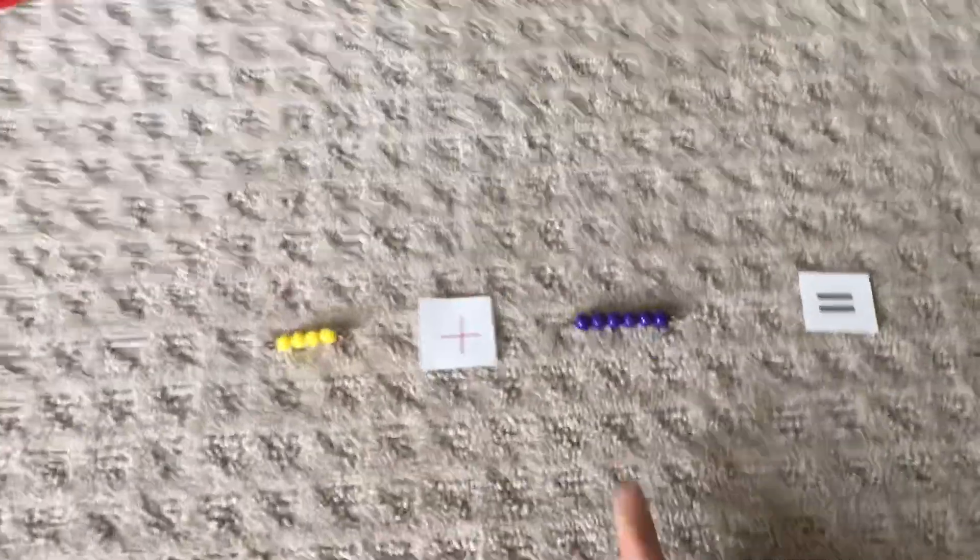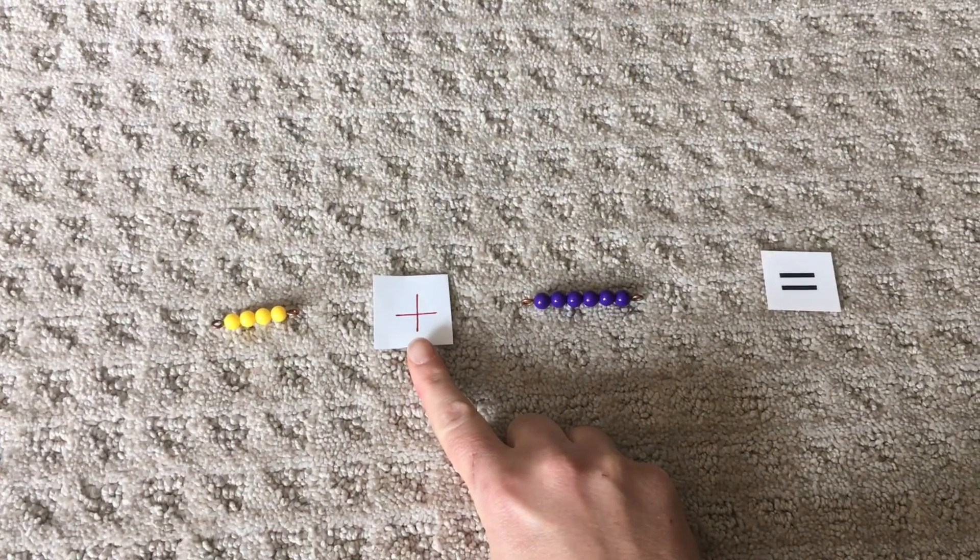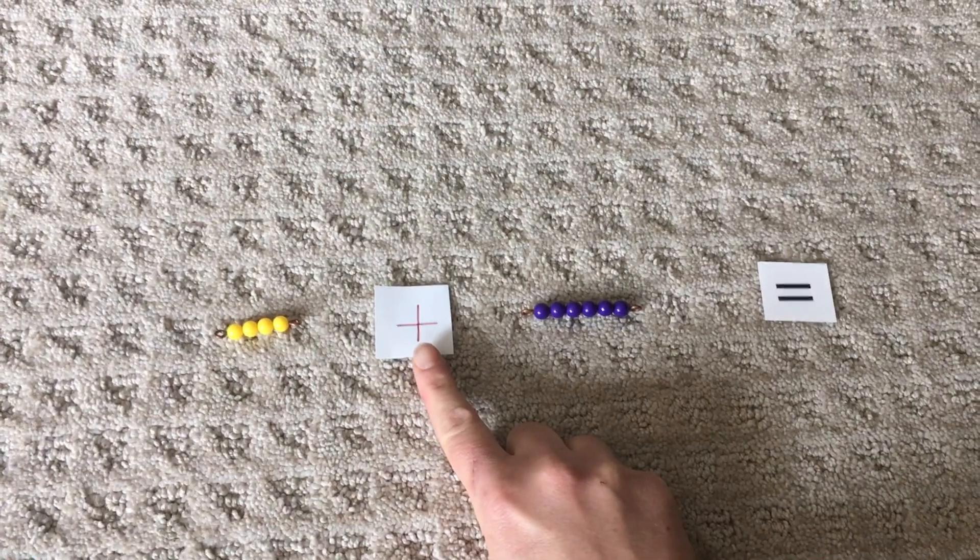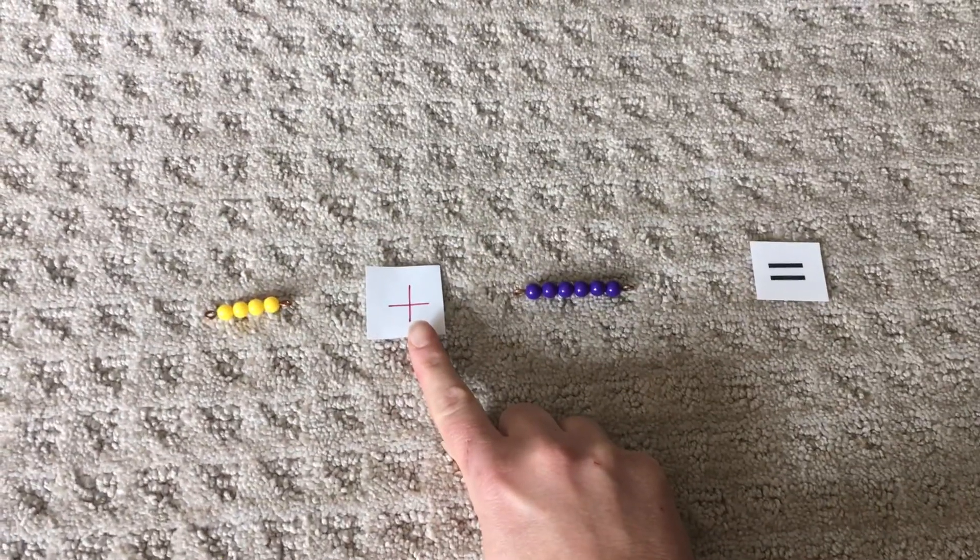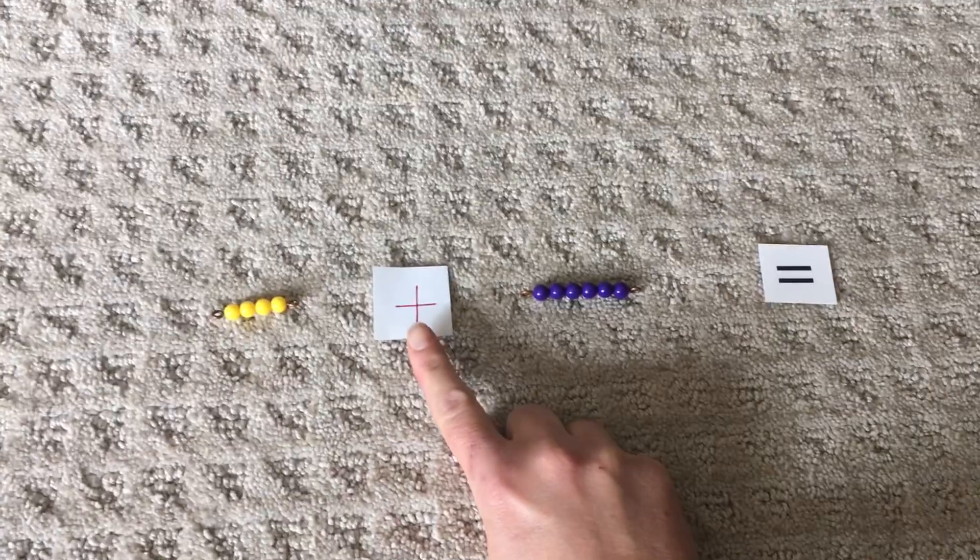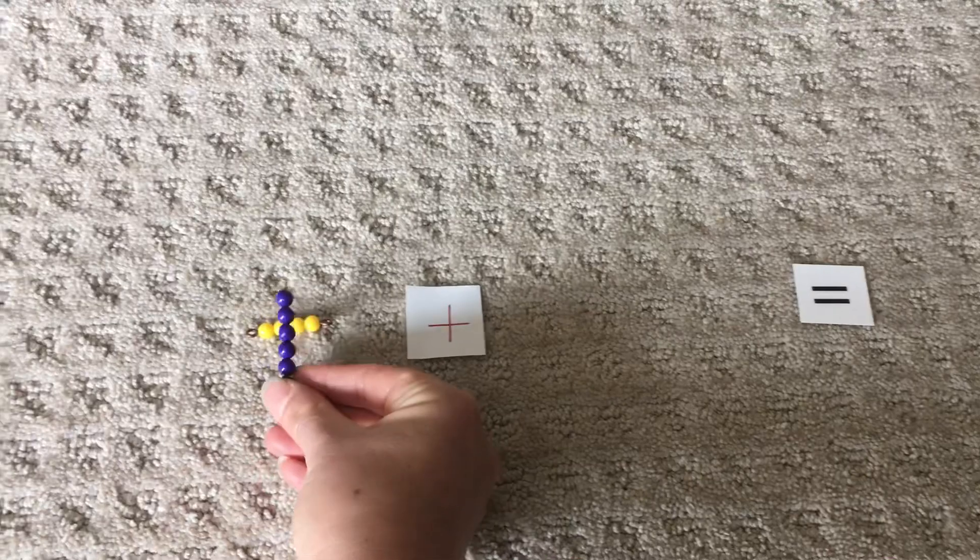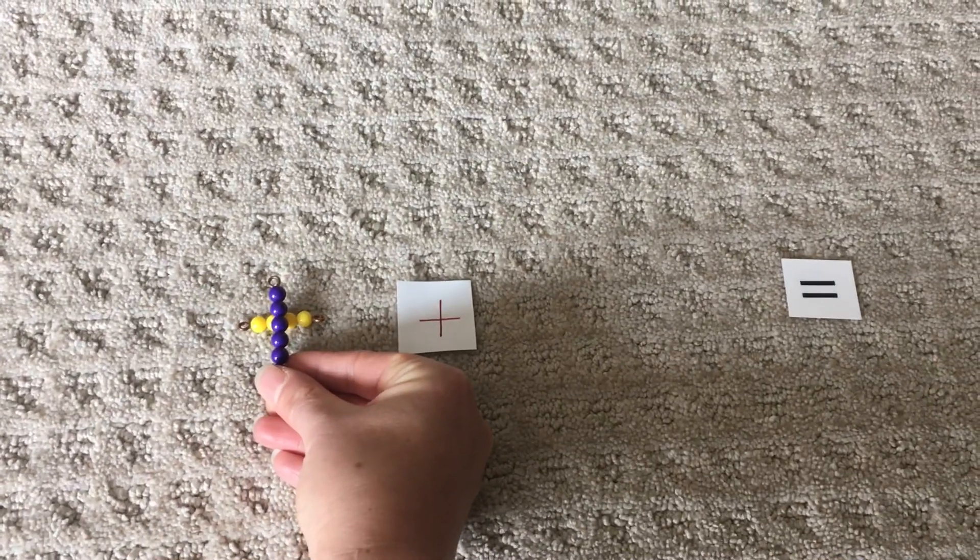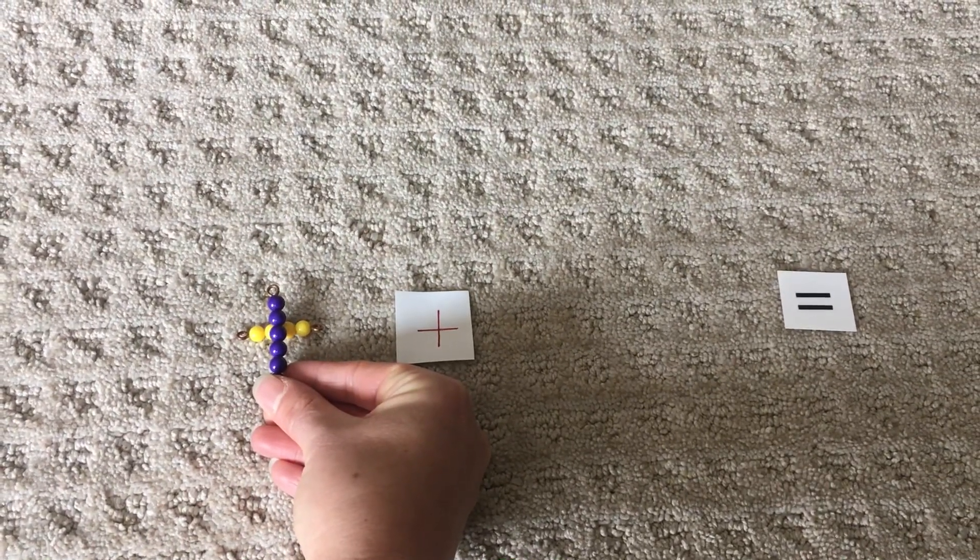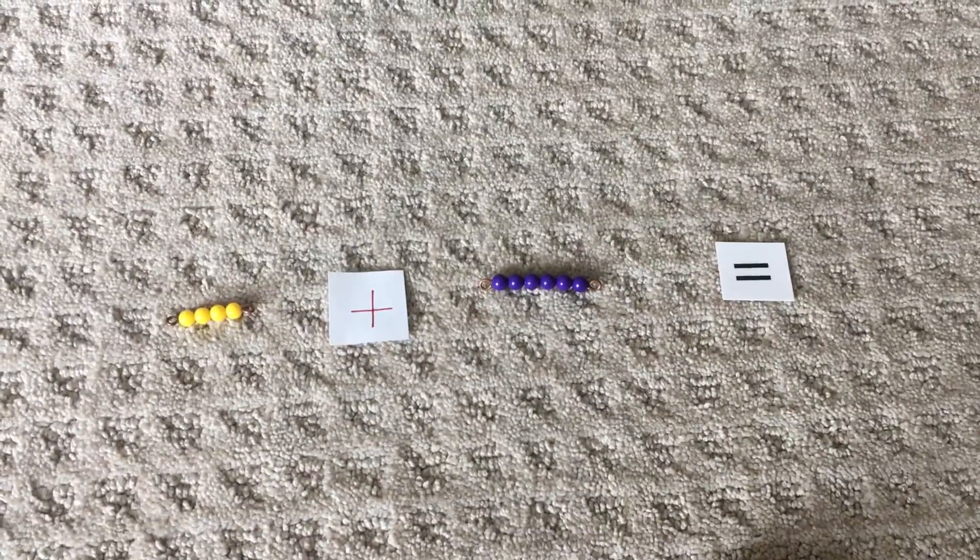Okay. This is our symbol that we use for adding together. It's called a plus sign or an addition sign. And it just means that we're putting this number and this number together to find out how much they make together. Now, how would we do that? Let's see.